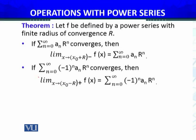The second condition is: if the summation of (-1)^n times a_n times R^n converges, then the limit as x approaches x₀ minus R from the positive side of f(x) equals f(x₀ minus R).